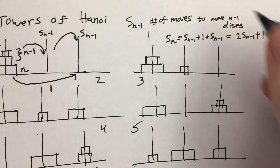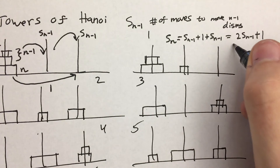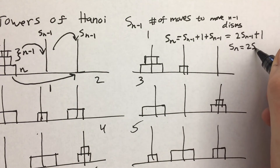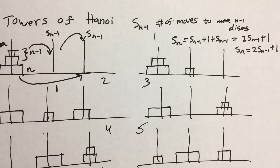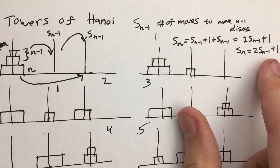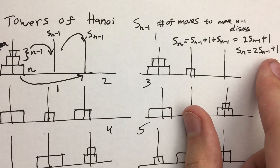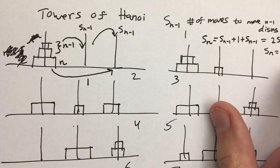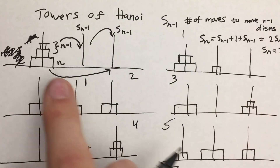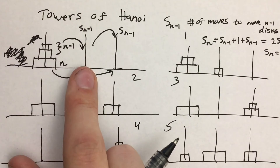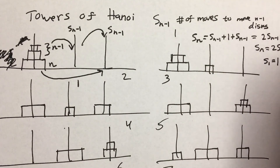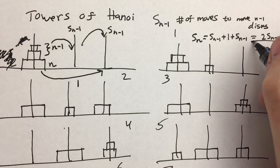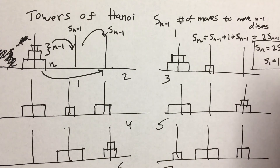So that is the recurrence relation for the Towers of Hanoi with the initial condition. Don't forget, this is a two-piece thing, so we need an initial condition. The question is, how many moves will it take to move just one disc to another post? That would just take one move. So we couple this with the initial condition that S sub one equals one. And that is the recurrence relation for the Towers of Hanoi.